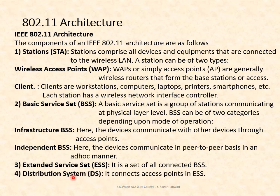The next component is the distribution system (DS), which connects the access points in an ESS. When all ESS access points are connected, that forms the distribution system. So the components used in IEEE 802.11 architecture are: stations, BSS, ESS, and the distribution system.